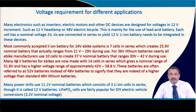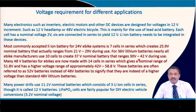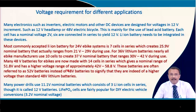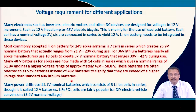For 36 V lithium-ion batteries, EV manufacturers use 10 cells in series, which creates a 37 V nominal battery with a range of 30 to 42 V. For 48 V e-bike batteries, 14 cells in series give a nominal voltage of 51.8 V with a range of 42 to 58.8 V. Because of this wide range, these batteries are often referred to as 52 V batteries rather than 48 V, to signify that they indeed have a higher voltage than standard 48 V lithium batteries.